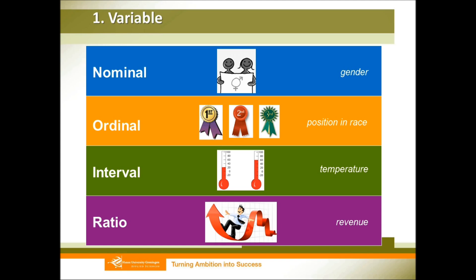For example, temperature: if today it is zero degrees outside, we cannot say there is no temperature outside. But for a ratio variable, zero has a true zero meaning. If your company's revenue is zero this month, that means your company has not earned any revenue. So this zero is a true zero, and that is a ratio variable.